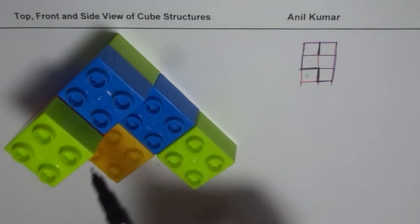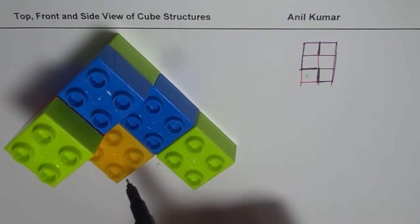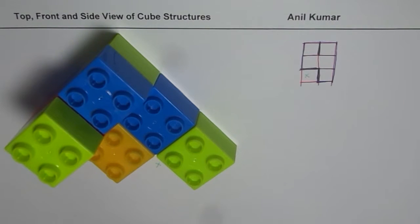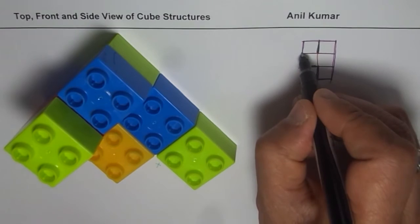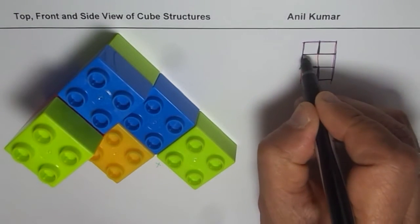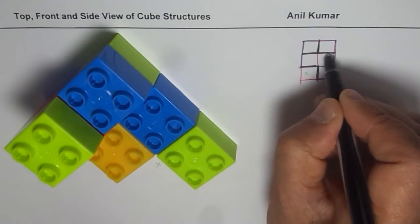Now if you see from top, so that is one change in depth. And then at this position also, there is change in depth. So these lines shown here represent change in depth. Do you get the idea?